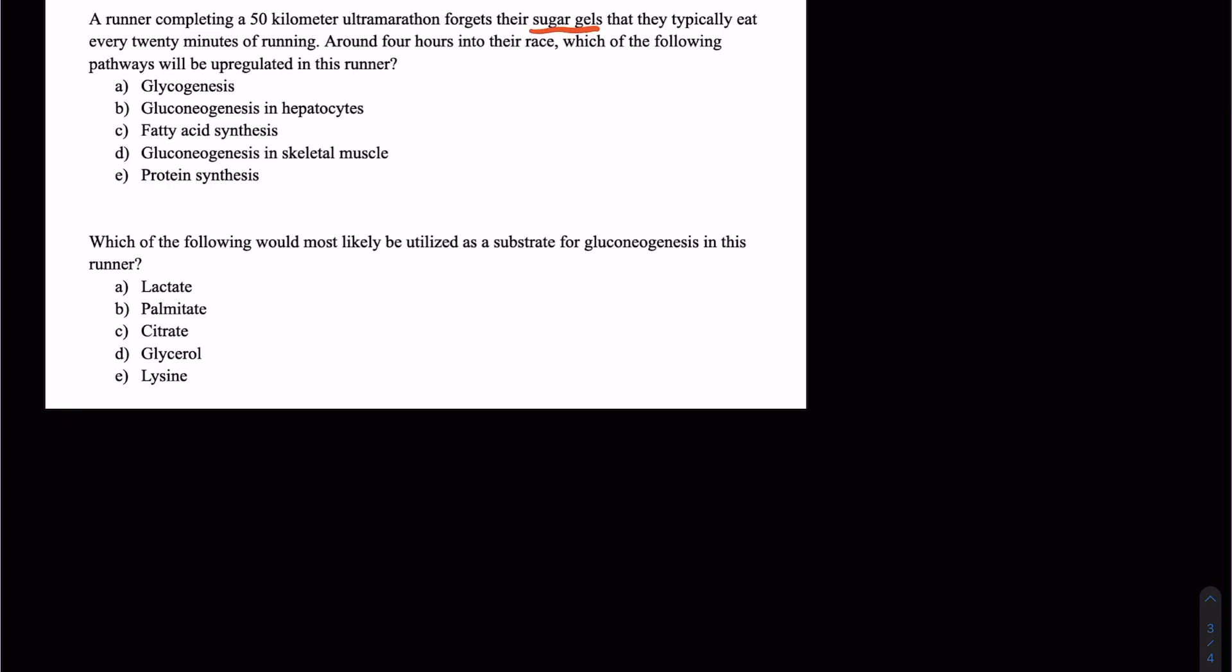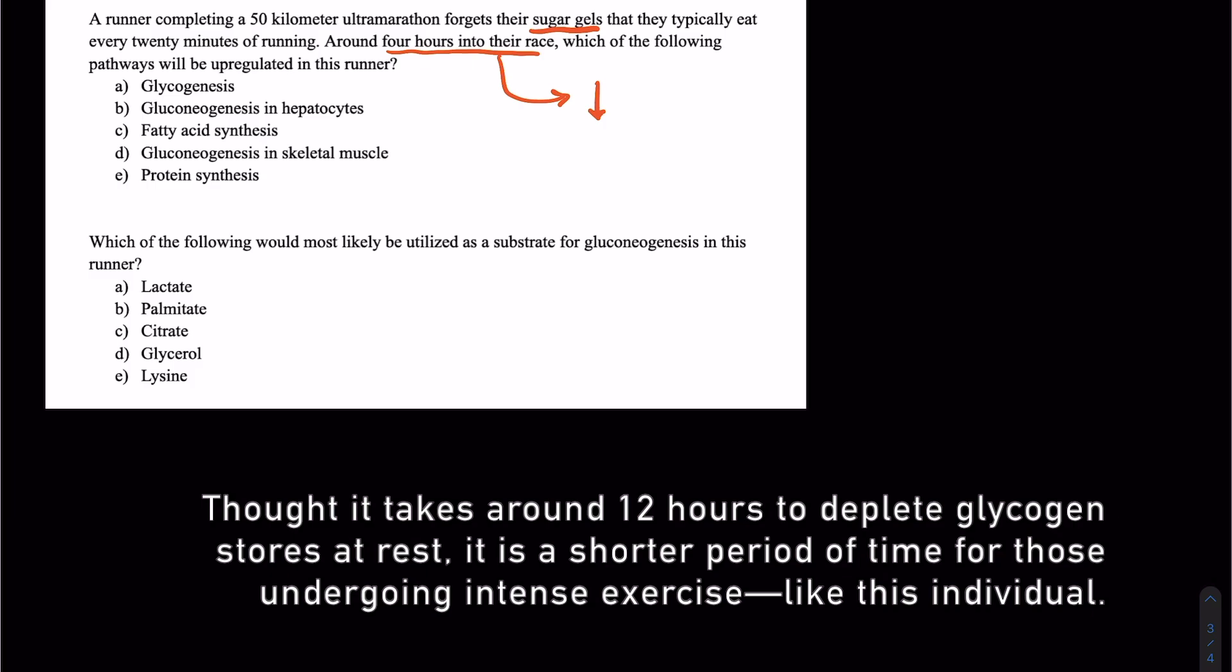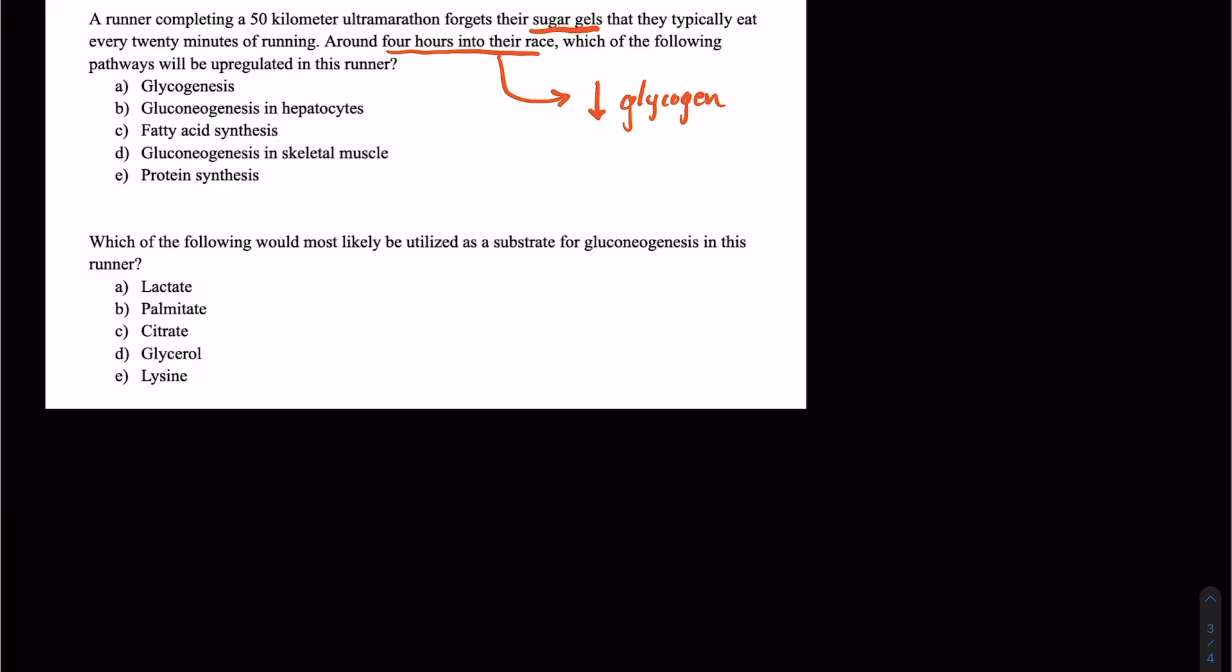But this person has forgotten their glucose gels, their sugar gels. And around four hours into the race, they likely have depleted their endogenous stores of glycogen, partly in their skeletal muscle, which the muscle itself uses, but also in their liver. So inside the liver, we've depleted a lot of our glycogen stores, and we haven't really been able to replace them.